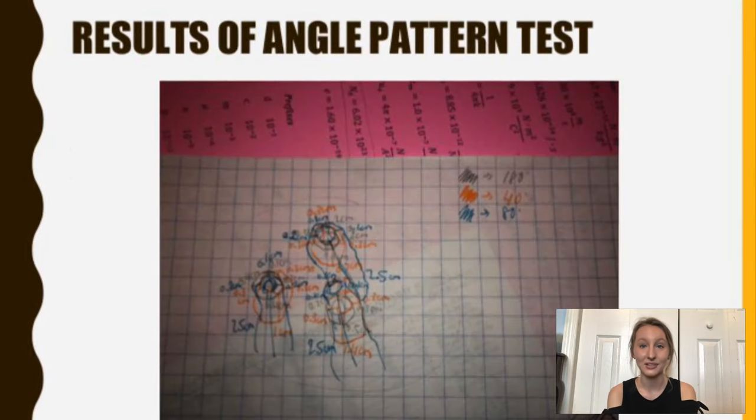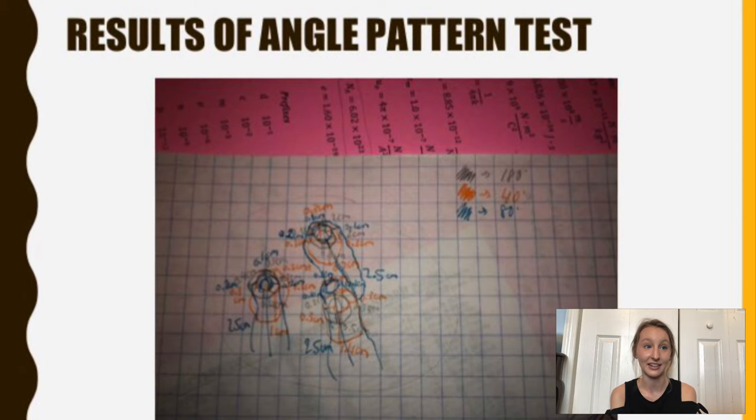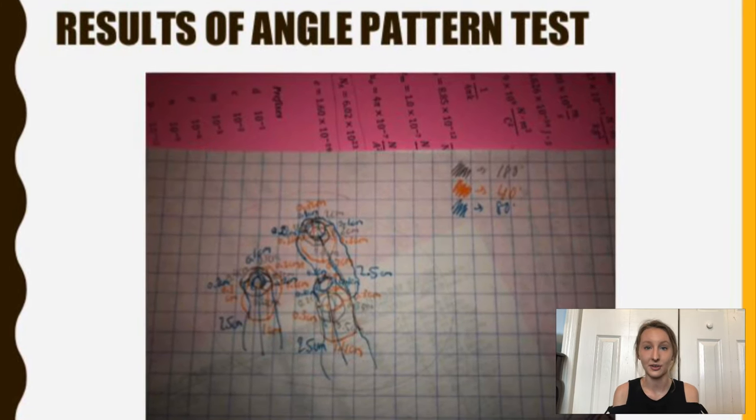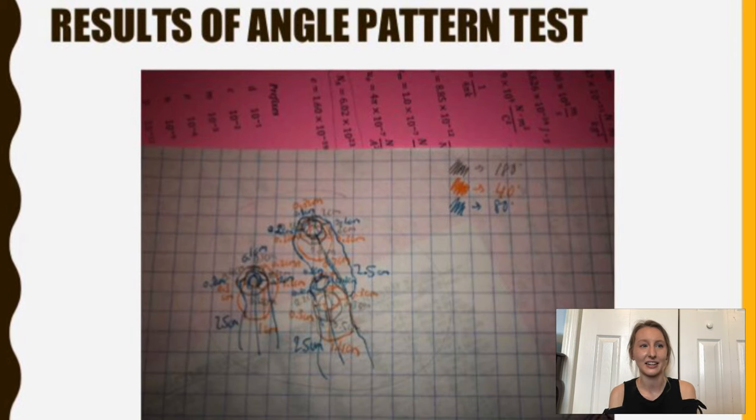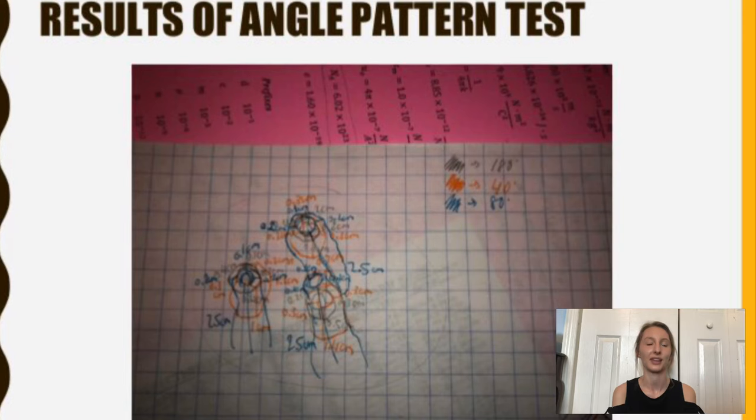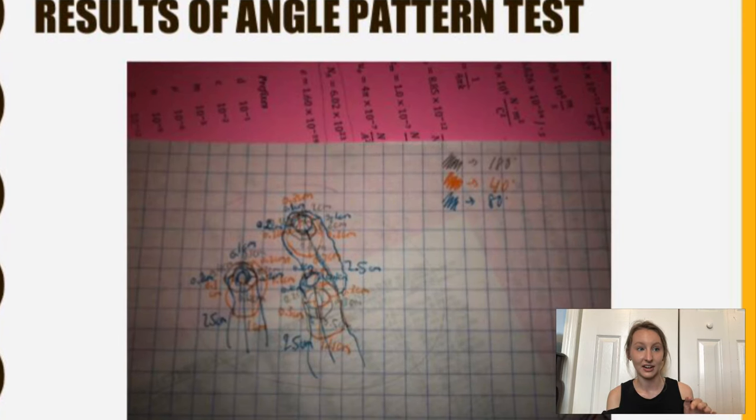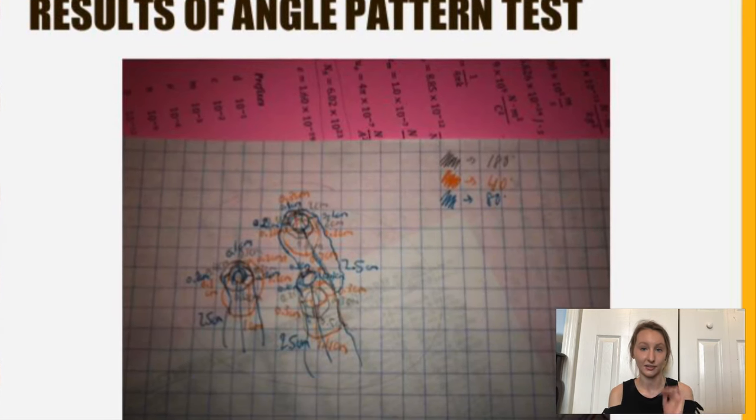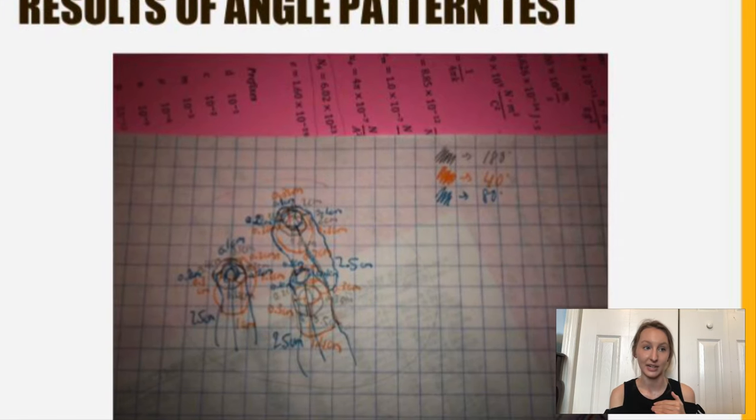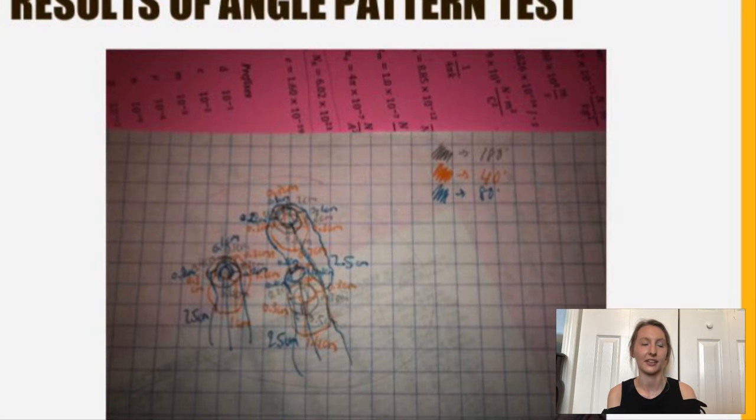So then whenever I did the results of the angle pattern test, I did the dark gray or black color for the 180 degree. And then I did the orange color for the 40 and blue for the 80. And I just traced that on with the measurements that I got of the up, down, left, and right with the brightest at the outermost rim data. So I just kind of combine all of that together.